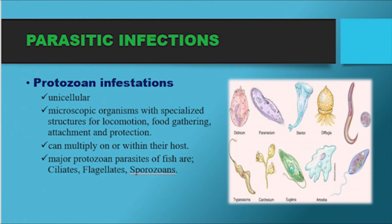Parasitic infections — Protozoan infestations. Protozoans are unicellular, microscopic organisms with specialized structures for locomotion, food gathering, attachment, and protection. They can multiply on or within their host. Major protozoan parasites are ciliates, flagellates, and sporozoans.